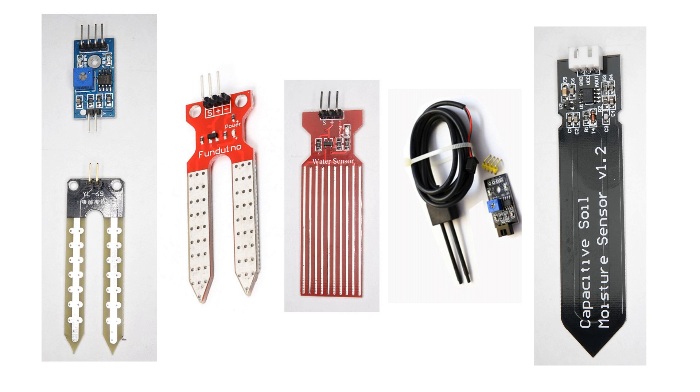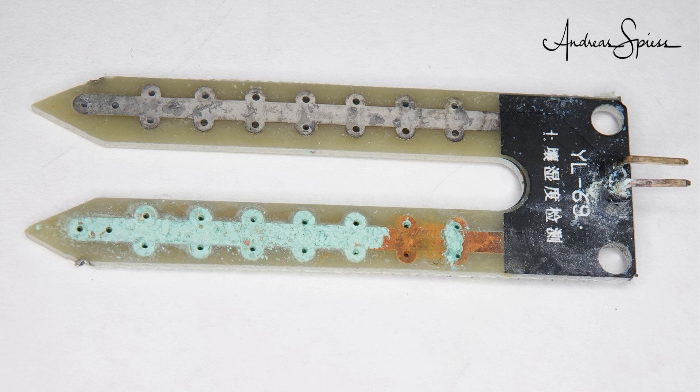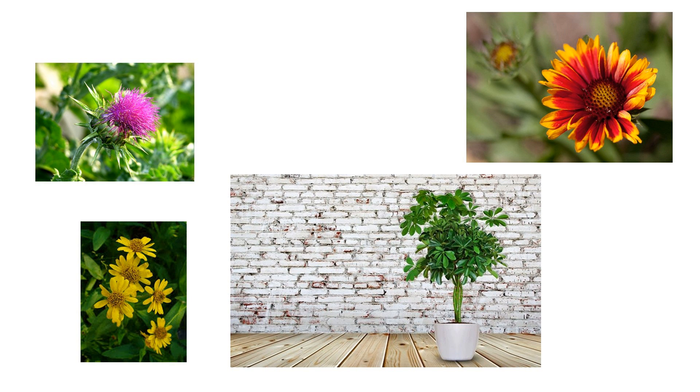Today, we will test different moisture sensors, and I will show you how they work and why most sensors from China destroy themselves. And of course, we will find the solution to the problem. Plants need a defined humidity to prosper. This is why we want to control the watering of plants using our home automation system. The controller has to measure the moisture of the soil and give commands to a pump or solenoid.